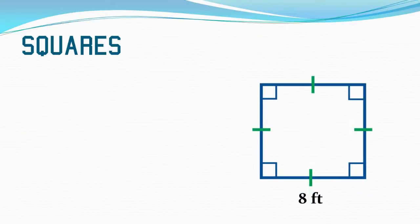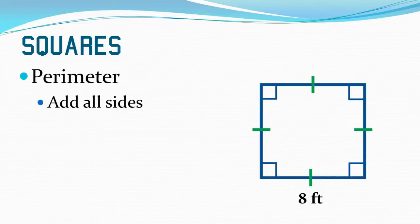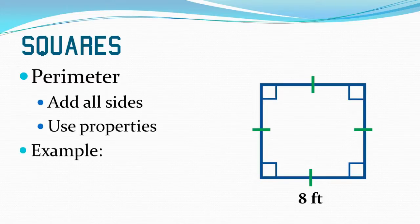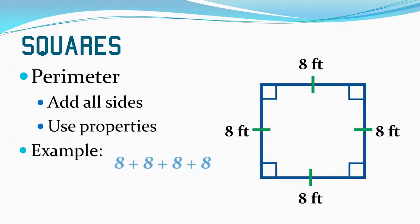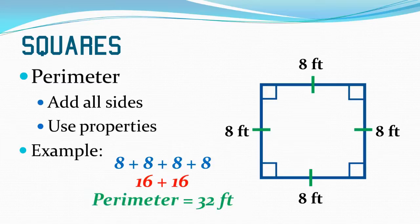Let's find the perimeter of a square. All I need to do is add up all my sides. I need to find all four sides and then find the sum. So I need to use my properties. I know that all four sides are congruent. So if that side's eight, that means that all four sides are eight. So I just need to add up eight plus eight plus eight plus eight, which gives me 16 and 16, or 32 feet.